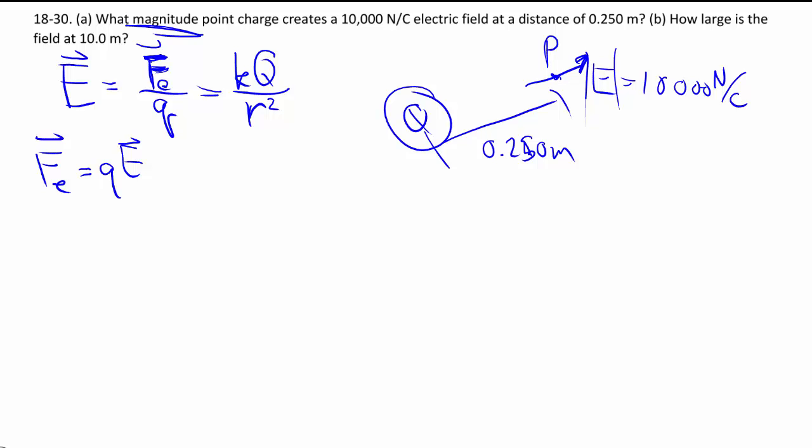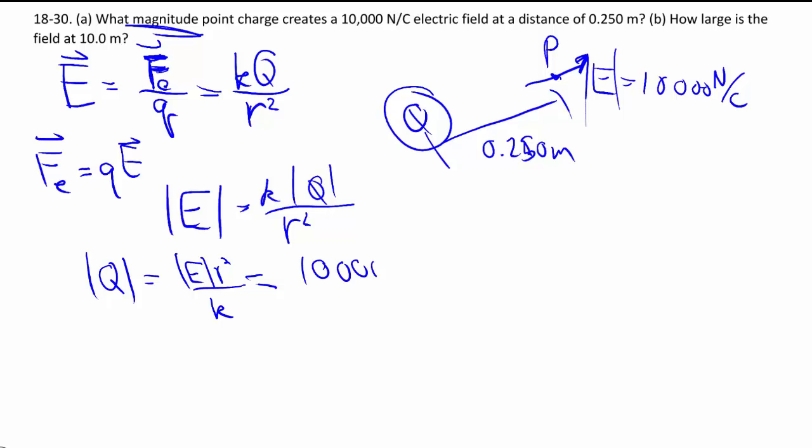Using the equation then, we know that the magnitude of E is equal to K magnitude of Q divided by R square. So we can solve for Q. And we're given my electric field, my distance, all divided by the same constant we've been dealing with quite a while now.